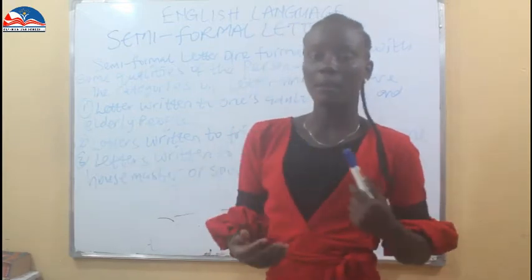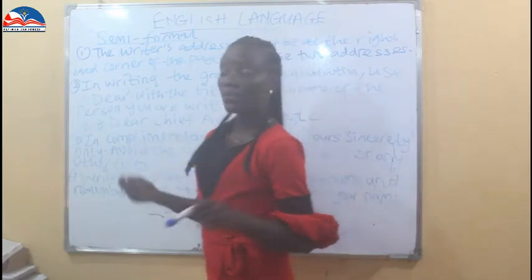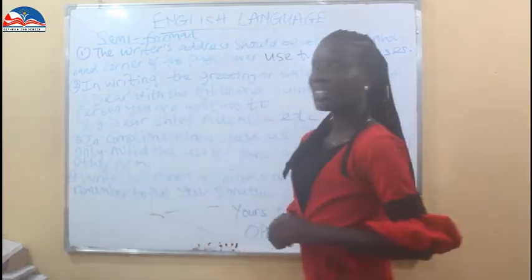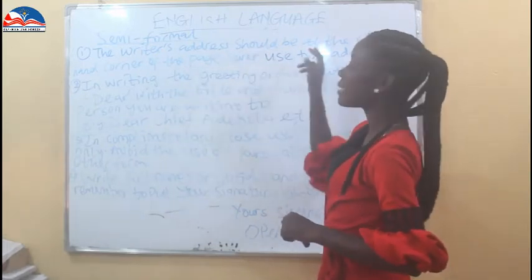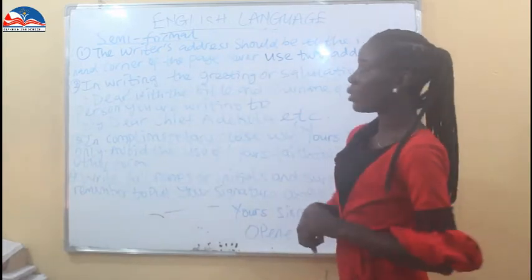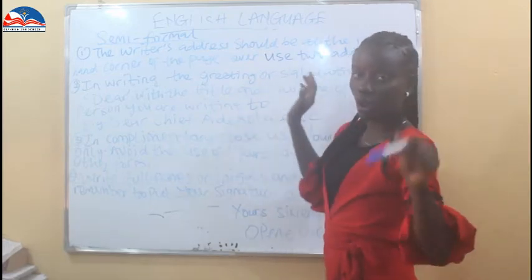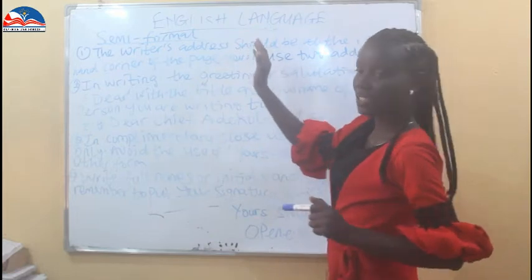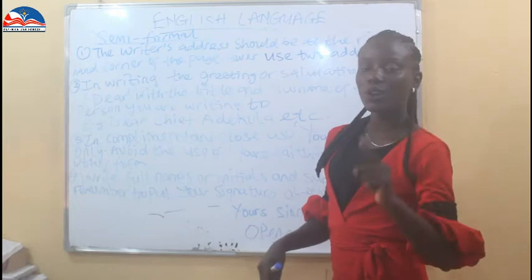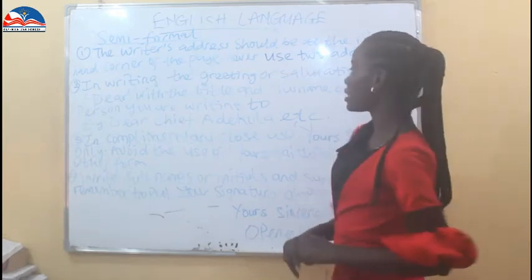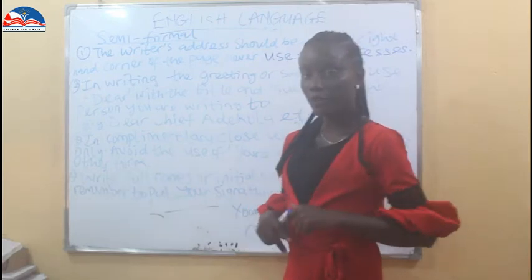We are going to move to the format of a semi-formal letter. In a semi-formal letter, the writer's address should be at the right-hand corner — just as in an informal letter, the writer's address is at the right-hand corner. Remember, we have just one address in a semi-formal letter. Never use two addresses in a semi-formal letter.